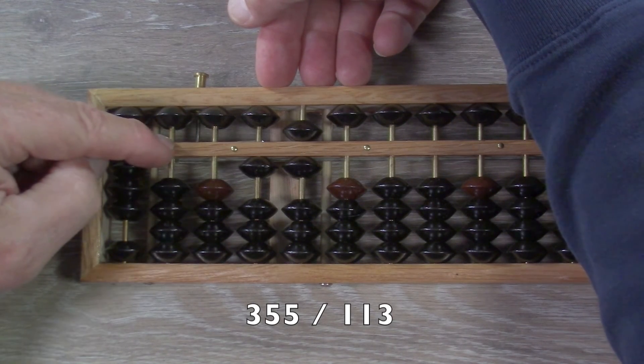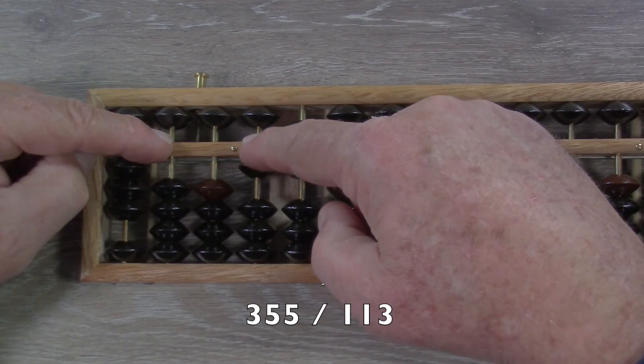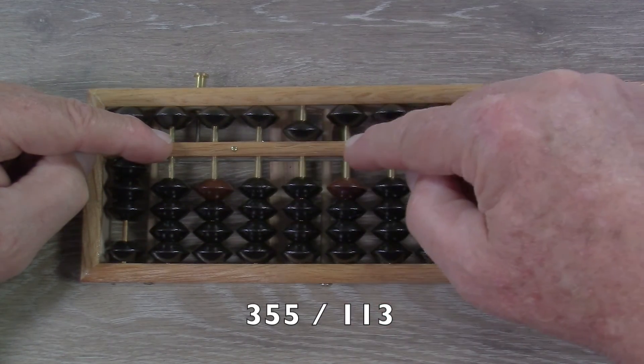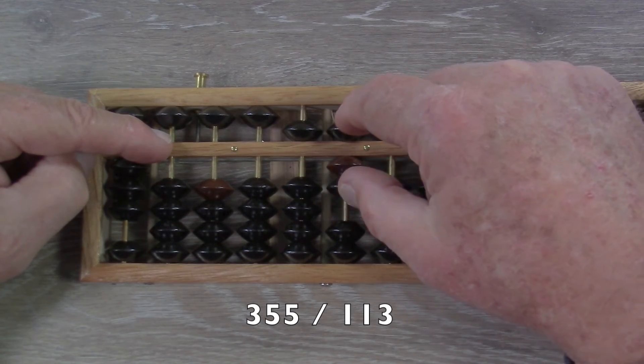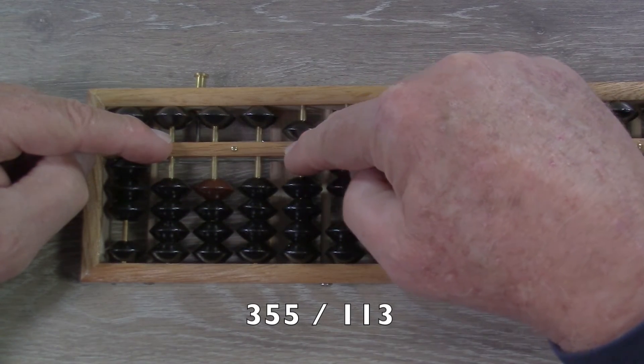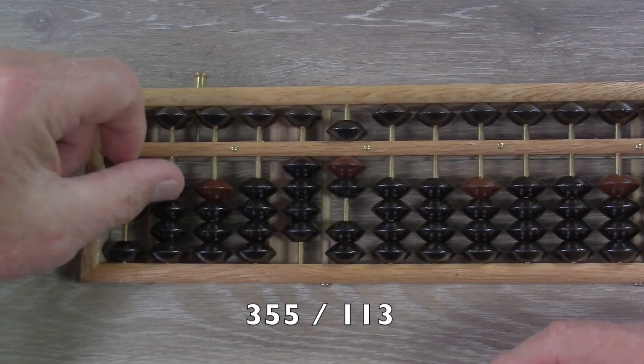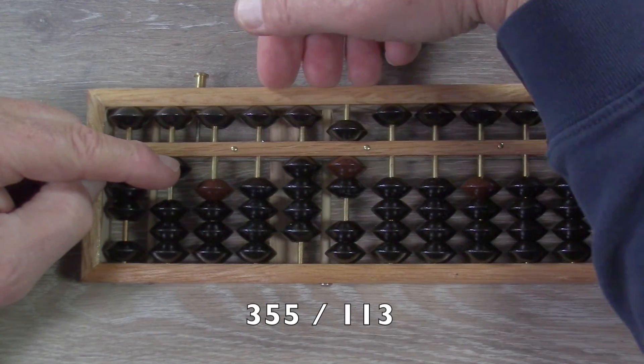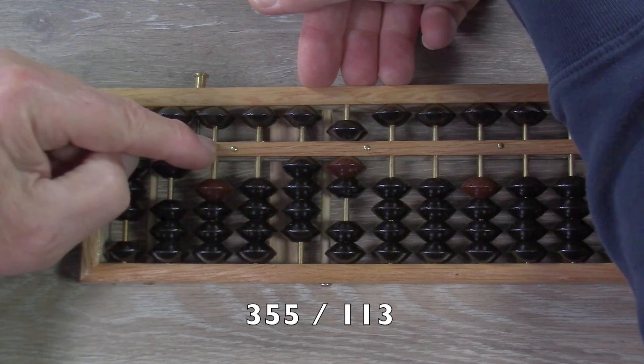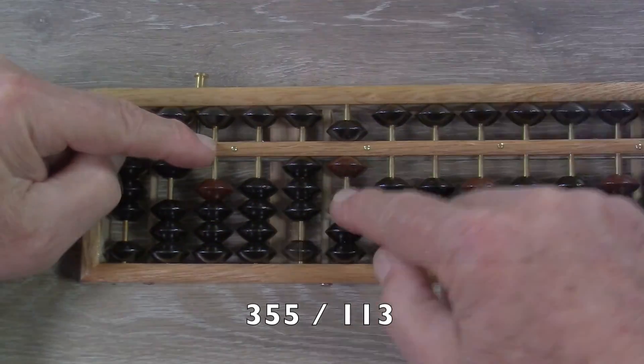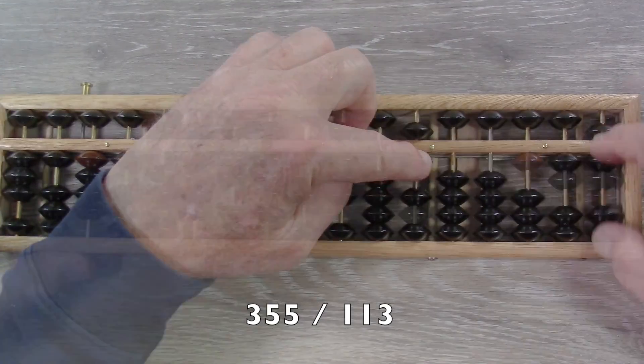And now we have 160. So, we're going to continue subtracting 113, 1, 1. And we don't have 3, so we're going to add the 10's complement and subtract a 10, which is subtracting a 5 and adding back a 4. So, that's 1. And now we're left with 47, which is too small. So, we're going to move over one more rod, and we're just going to continue this as we go.